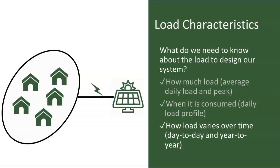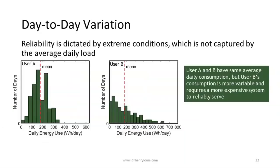We're also interested in how load might vary over time on both short and long time scales. Consider two users with the same average consumption: User A is easier to supply reliably than User B because User A's daily usage is much more consistent. Reliability isn't dictated by the average — it's dictated by extreme events. Perhaps a user has a few days a year where they consume two or three times their average. Those are the days you worry about from a reliability standpoint. We need to understand not only the average but the distribution — the probability that they're going to use two or three times or more than their average — to have a good understanding of the reliability requirements of our system.